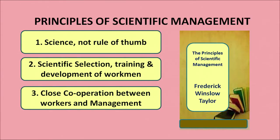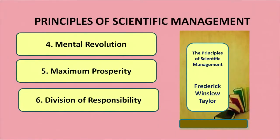For the purpose of accomplishing what scientific management suggests, there are certain principles given by F.W. Taylor: science not a rule of thumb; scientific selection, training and development of workmen; close cooperation between workers and management; mental revolution; maximum prosperity; and sixth, division of responsibility. Let us now learn one by one in detail about these principles of scientific management.